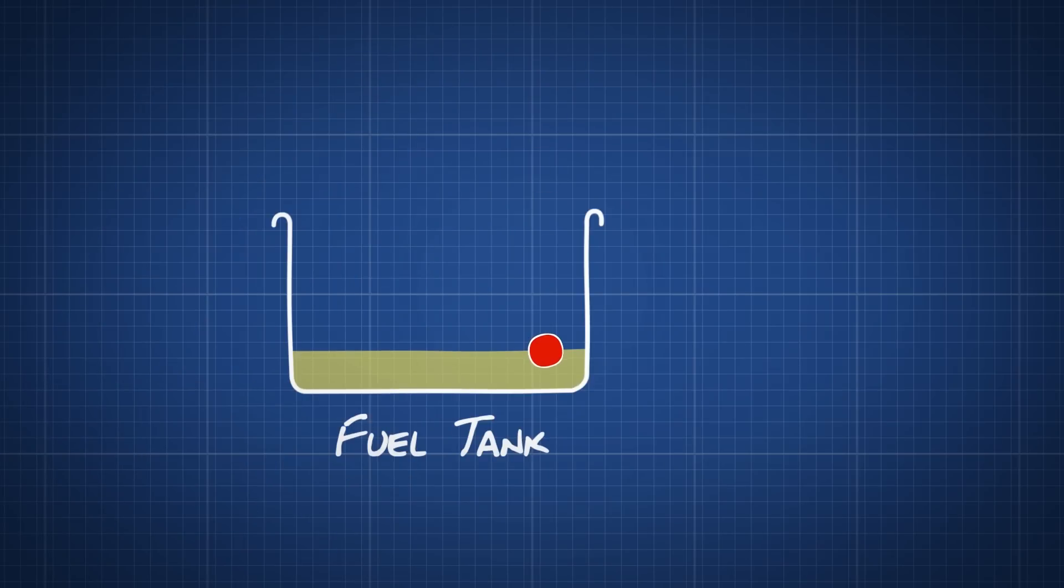A small float sits in your car's fuel tank. The float bobs on top of the fuel. The higher the level, the higher it floats.